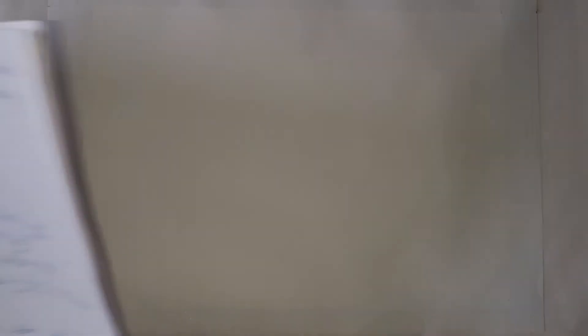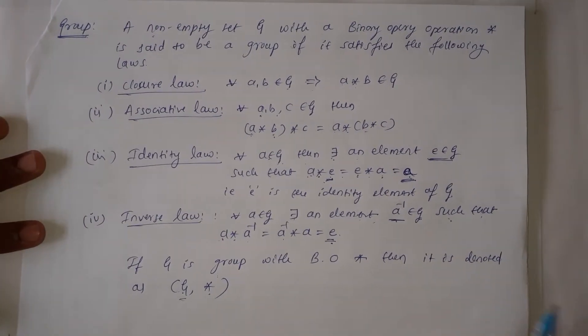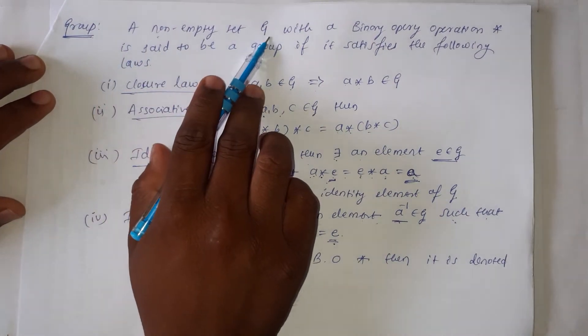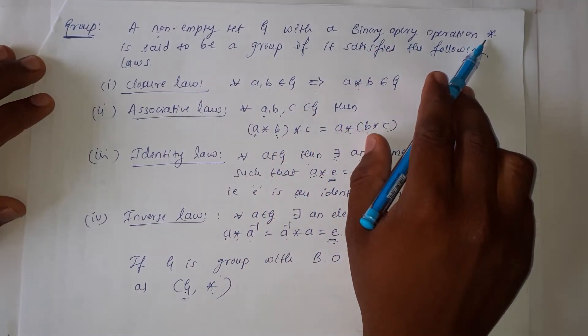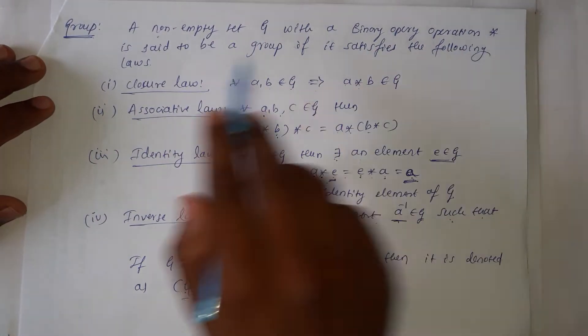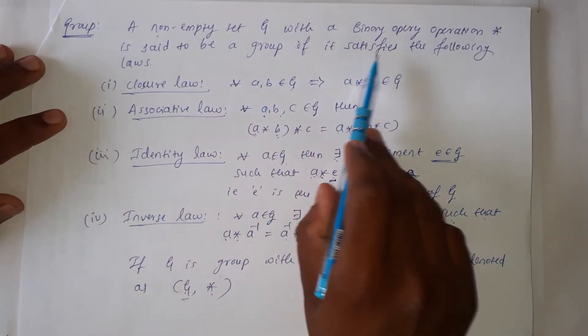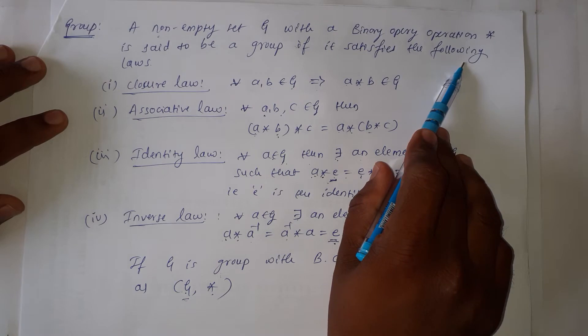Let us recapitulate the definition of group. Here it is the definition: A nonempty set G with a binary operation star is said to be a group if it satisfies the following laws.